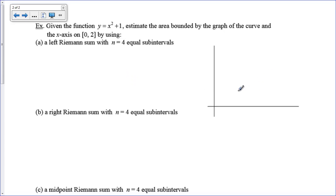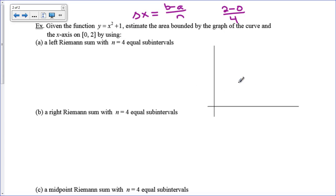Now let's look at the graph of y = x² + 1 and estimate the area from 0 to 2 using a left Riemann sum with n = 4 sub-intervals. There's a formula: delta x equals b minus a over n. Here a = 0 and b = 2, so delta x = (2 − 0) / 4 = one-half. The width of each rectangle is one-half, giving sub-interval endpoints at 0, 1/2, 1, 3/2, and 2.